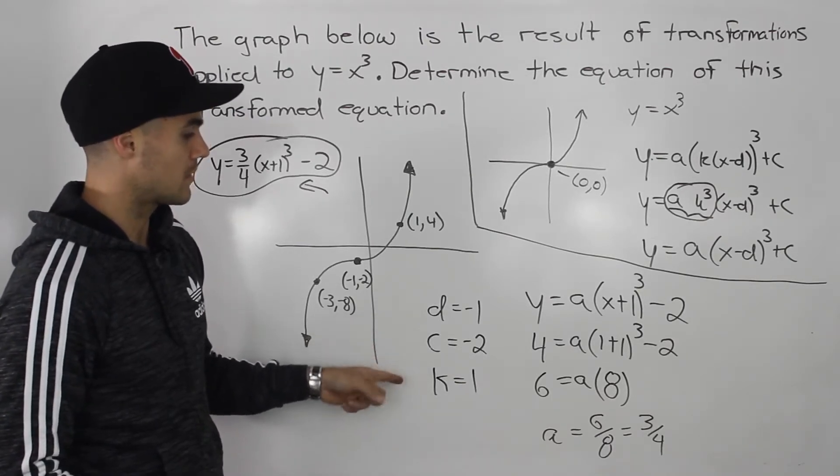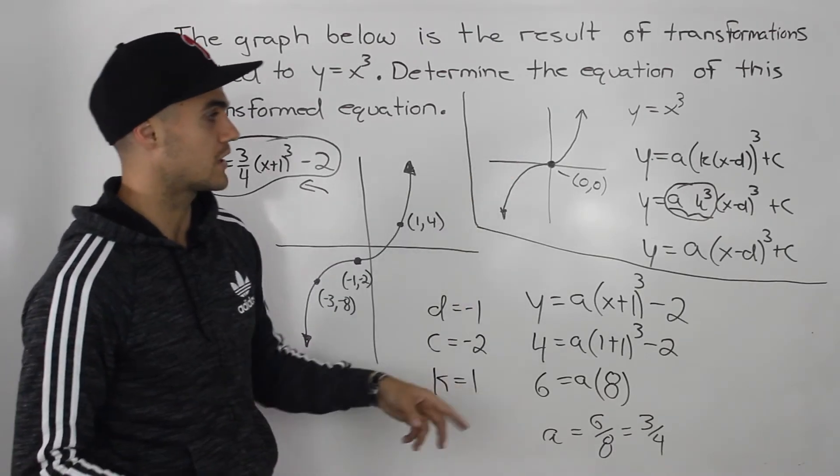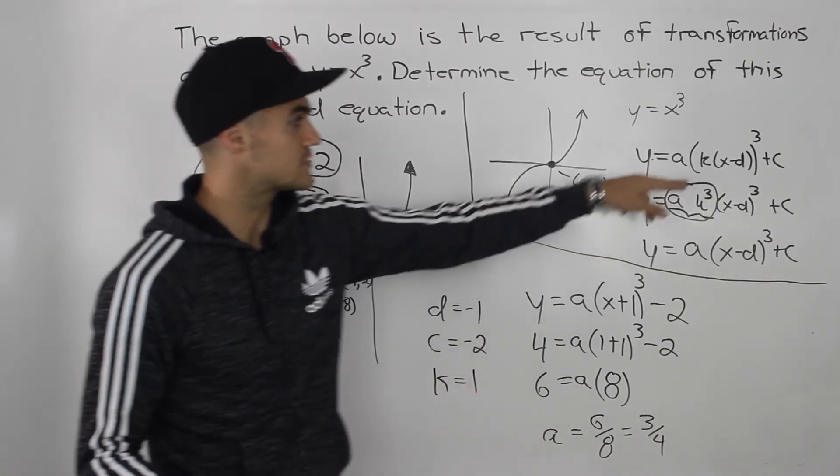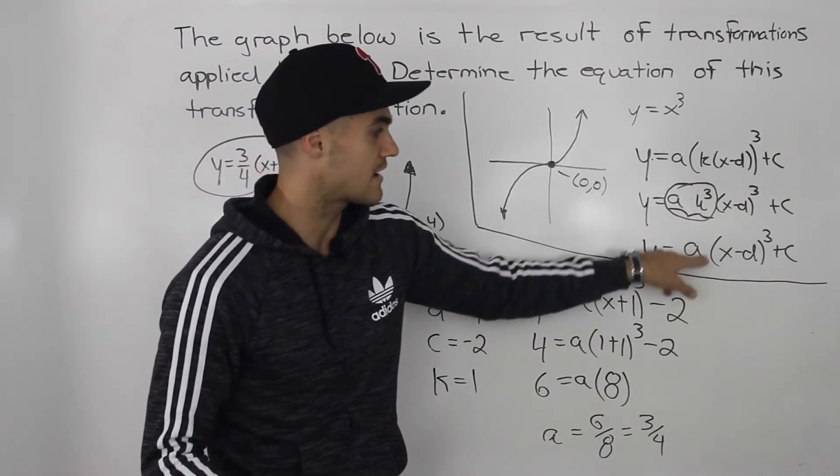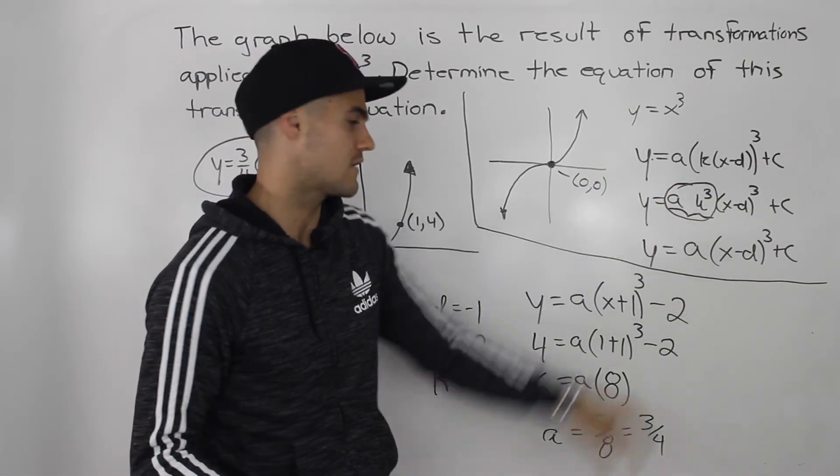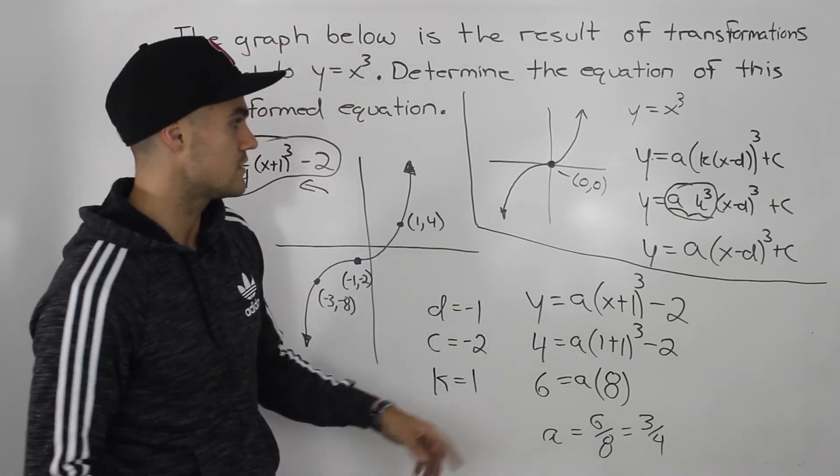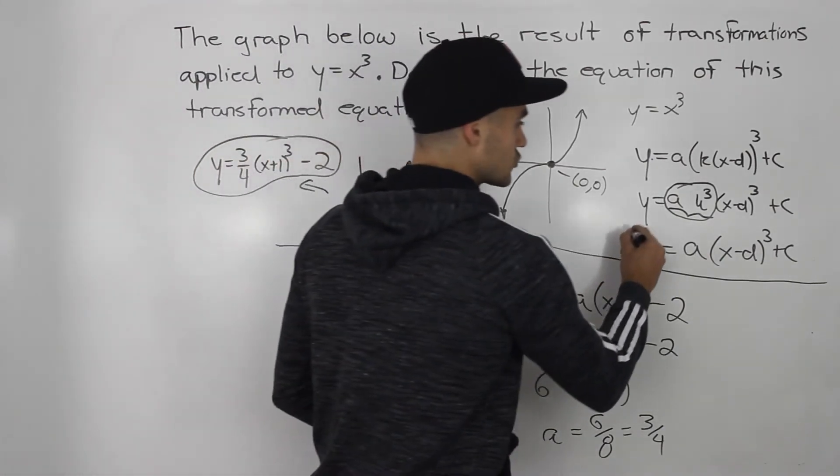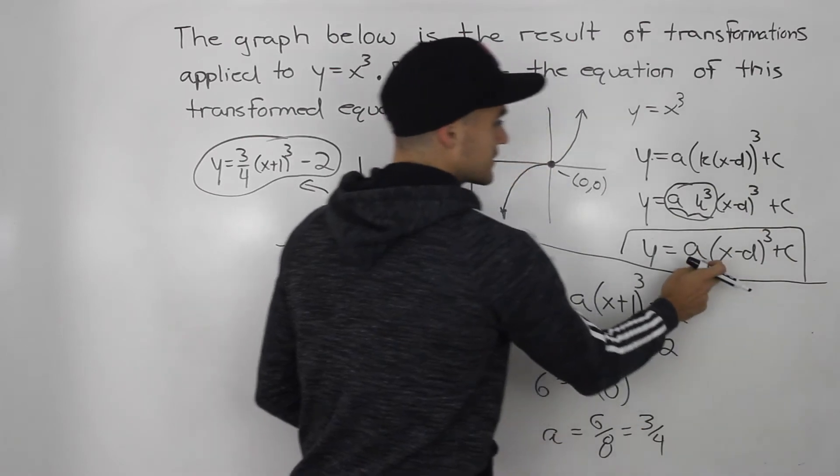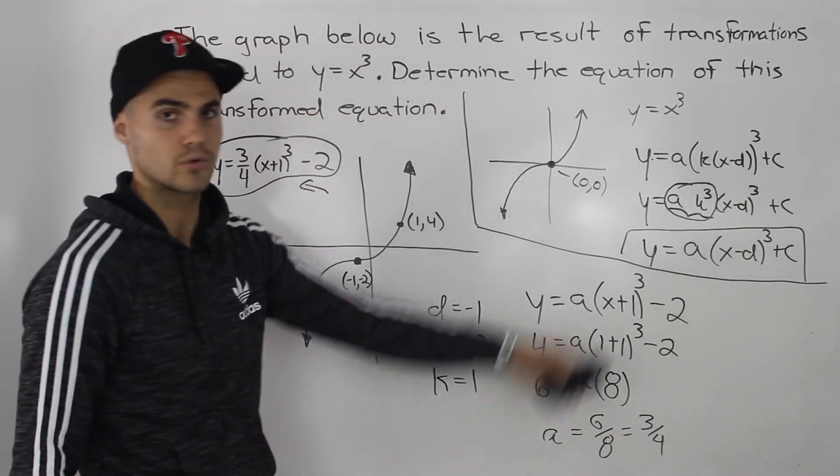And then you also want to remember that the k value for x cubed can always be 1, because you could always factor it out and you can always just have one constant in front, that a value. So the general format, general transformation format you could always use for x cubed is this here. Notice how there's no k value.